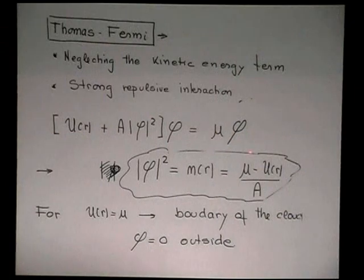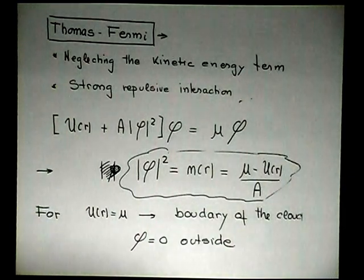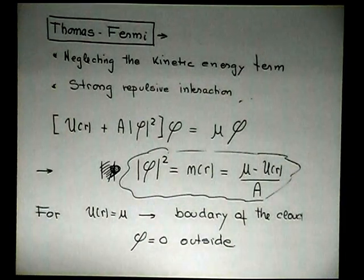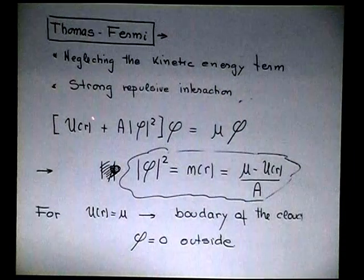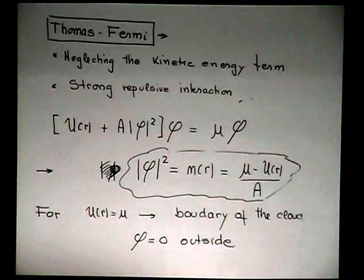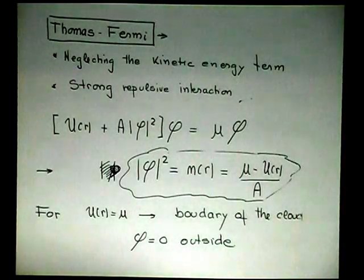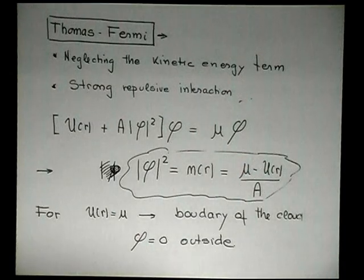And once I have that, this is the equation, right? That I have. This is the chemical potential. And this equation everybody can solve, right? This is an algebraic equation. You eliminate, this is phi squared is equal to this. And this cannot be anything. There is a moment where this goes to zero. So the wave function goes to zero there.